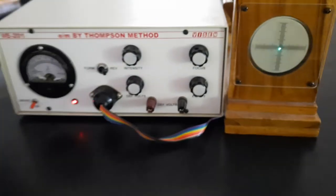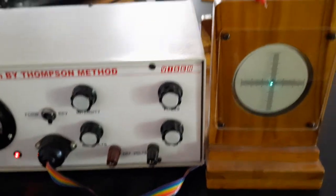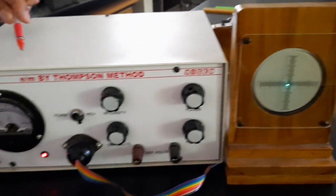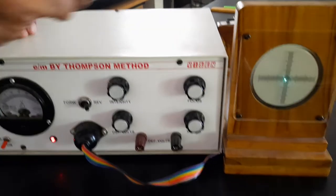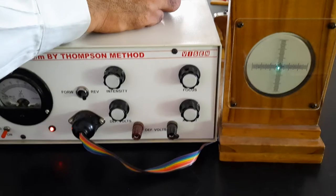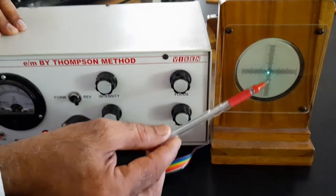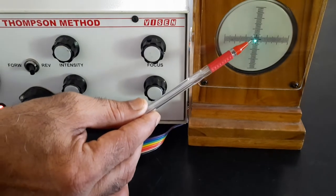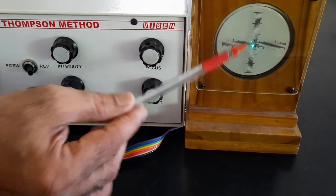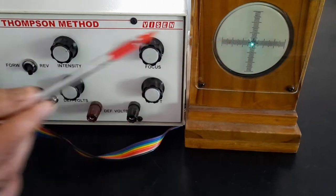The other part of the equipment is the CRO, which has a dedicated power supply. In this CRO, electrons are emitted and strike the screen. You will get a spot of light, so by the spot of light you can detect the presence of electrons on the screen.